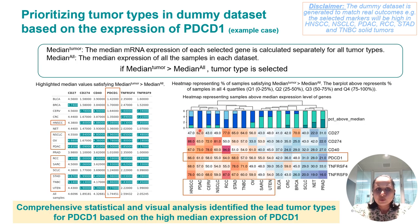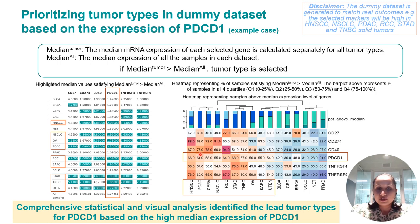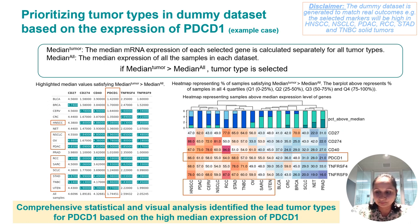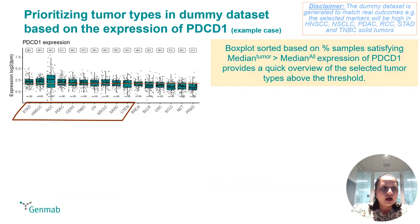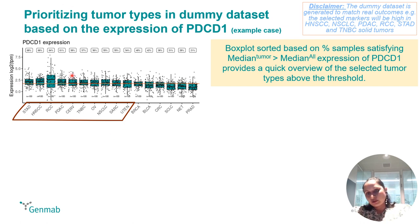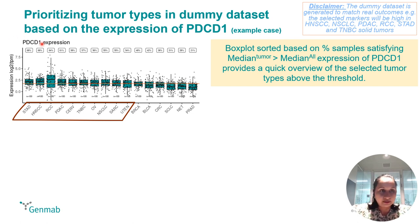Another visualization is a heatmap, where we look at the percentage of samples that are above the threshold. For example, here 66% of the samples in head and neck had high expression of PDCD1 compared to the threshold. Along with this, we also have a box plot, which can be sorted based on the percentage of samples that satisfy the threshold criteria.